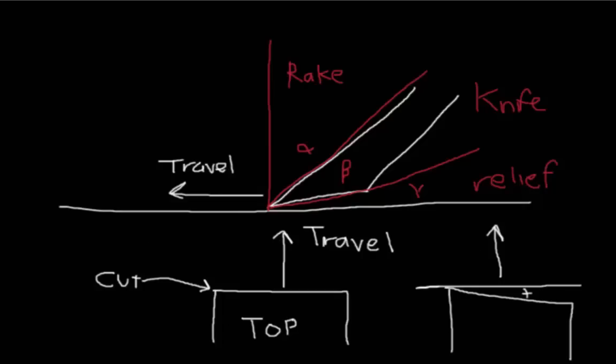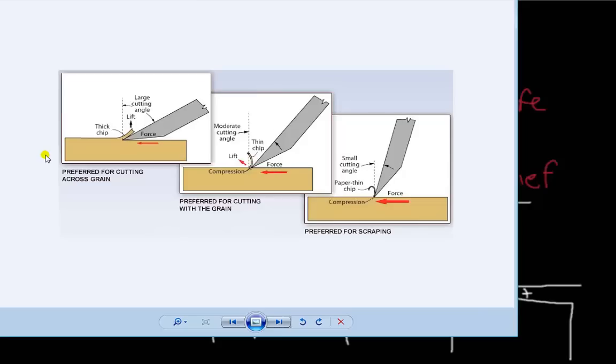Now let's look at another picture. These are three different angles for the cutting tool here and you can see we have an angle here, this angle here for the knife, and we have the relief. Depending on the angle for the rake will cause different chips. This is being displayed against a wood grain for example.